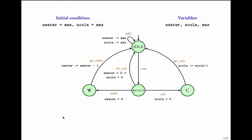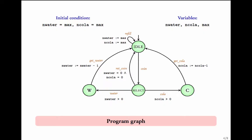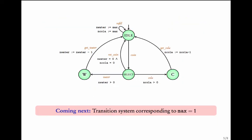This kind of picture along with the initial condition is called a program graph. As you might have noticed, a program graph looks different from a transition system. A transition system can have only action names on its edges, whereas in a program graph, in addition to the action name, there are conditions and assignments.